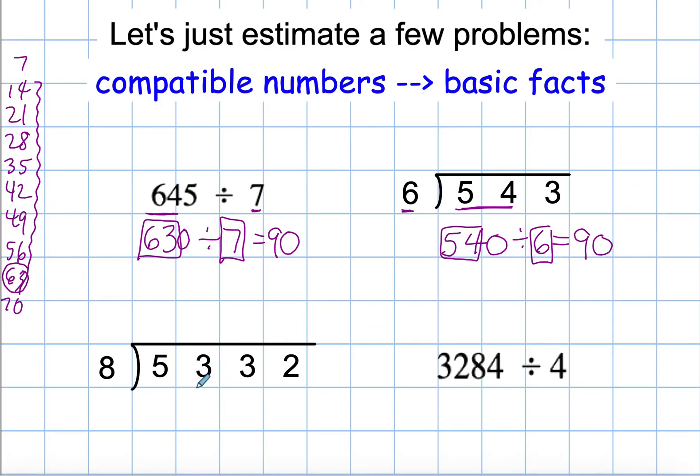Let's look down to the problem down here. 5,332 divided by 8. Same thing. I'm going to be thinking my multiples of 8, and it needs to be near 53. Now, I have 48 right before it, and I have 56 right after it. I have to decide which one's a little bit closer, and the 56 is a little bit closer. So I'm going to go with 5,600 divided by 8. 56 divided by 8 is 7, and then I have my two 0s. However, if you had done 4,800 divided by 8, which is 600, there would not have been a problem with that.